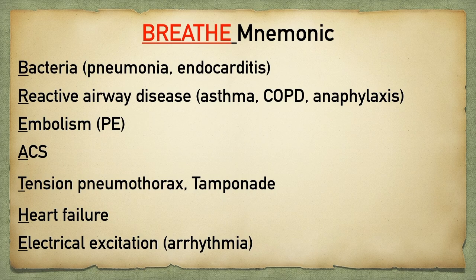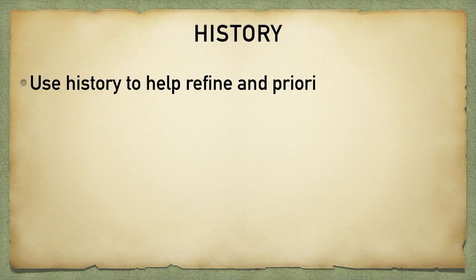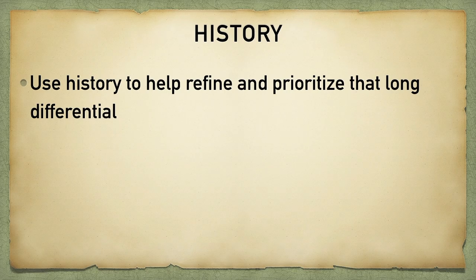Hopefully this mnemonic gives you an easy way to remember the main intrathoracic emergencies that can lead to shortness of breath. It's not to say that other things can't become emergent — there are also extrathoracic causes that lead to shortness of breath — but these are the main emergencies. Now it's time to get that history, using it to refine and prioritize that long differential diagnostic list.